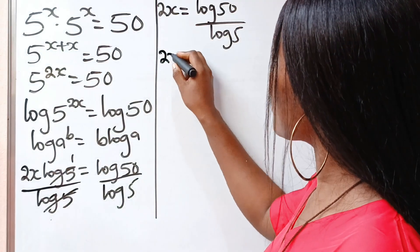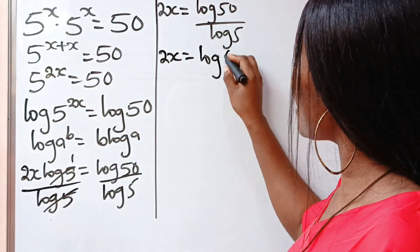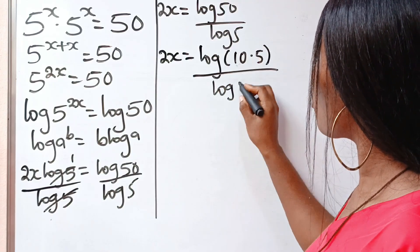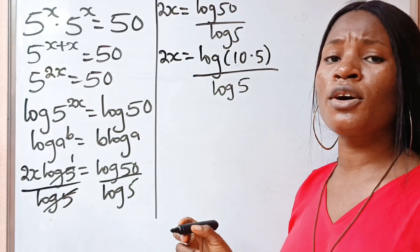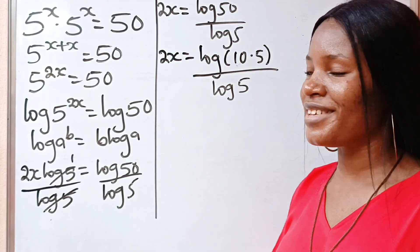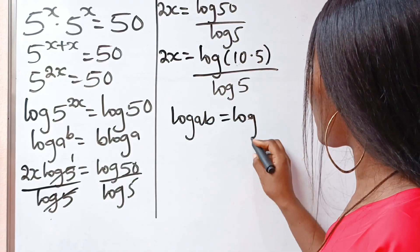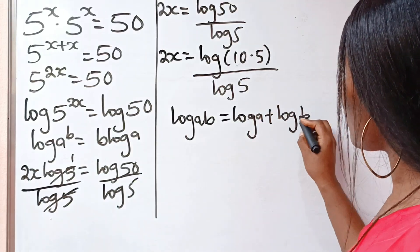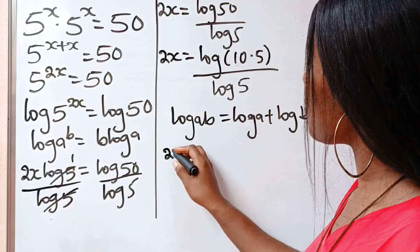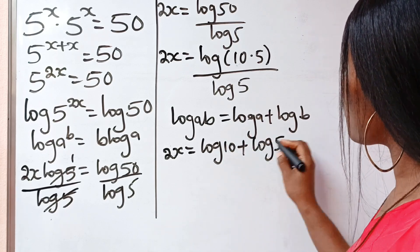Now, let's express 50 in terms of 5. 50 is 10 times 5, so we have log(10 times 5) divided by log 5. Remember the law of logarithms that states that log of a multiplied by b is equal to log a plus log b. So we can write this as: 2x is equal to log 10 plus log 5, all divided by log 5.